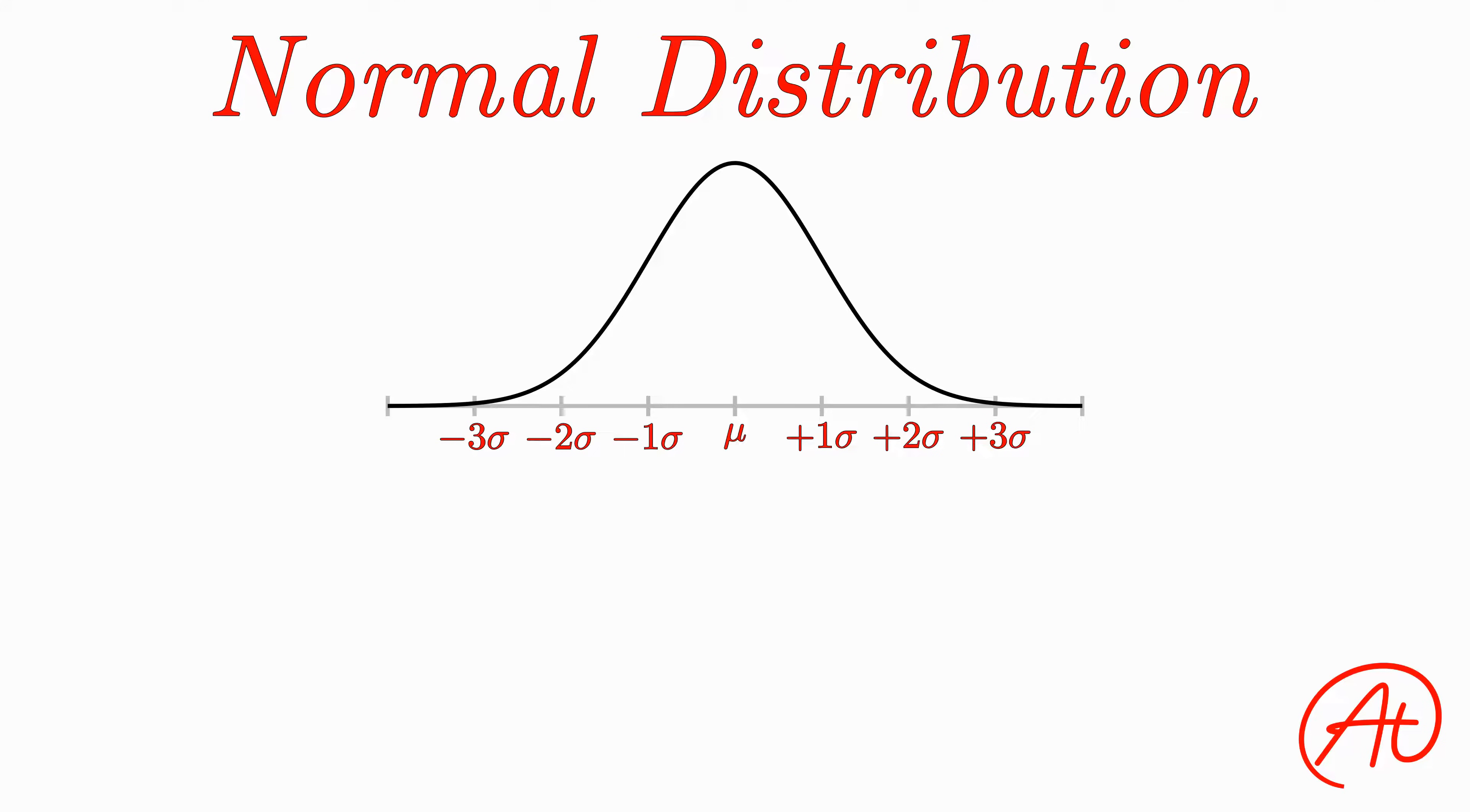Now the reason I called this distribution one of the most popular ones is because it can be used for so many types of real-world applications. For example, certain things like people's heights, weights, and even IQ follow a normal distribution pretty closely. However, because the normal distribution is so widely applicable, and each application comes with its own mean, standard deviation, and most importantly units, this causes some problems.